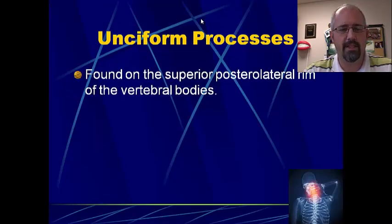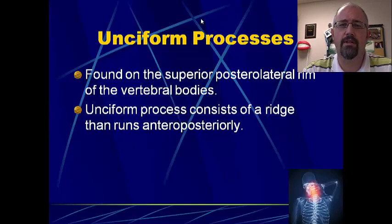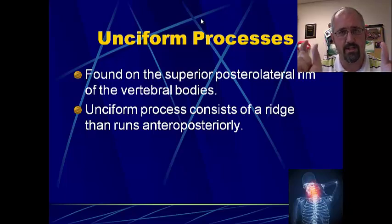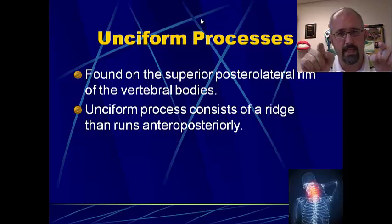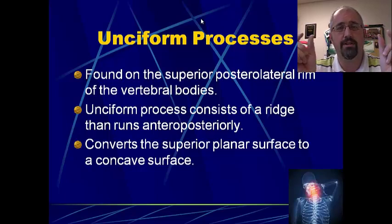The other special little process that you'll see is the unciform process. The unciform processes are only found in the cervical spine, and they're particularly found on the superior posterior lateral rim of the vertebral bodies. They consist of a ridge of bone that runs anterior to posterior — on either side of the vertebral bodies, you've got this narrow ridge of bone that runs and creates a nice reservoir and valley for the intervertebral disc to sit right in there, being protected on either side by that ridge of bone.